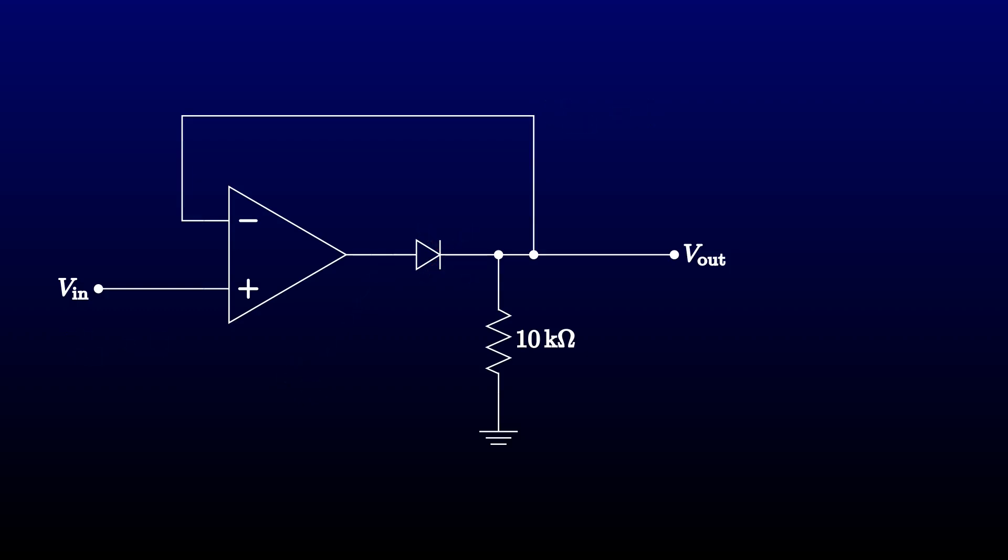When the diode is on, the feedback loop will make the effective output impedance nearly zero. That's good. But when the diode is off, the only thing that can source or sync current to the output is the pull-down resistor. If the load is returned to anywhere but ground, that might be an issue. But if need be, we can take care of that by simply adding a voltage follower.